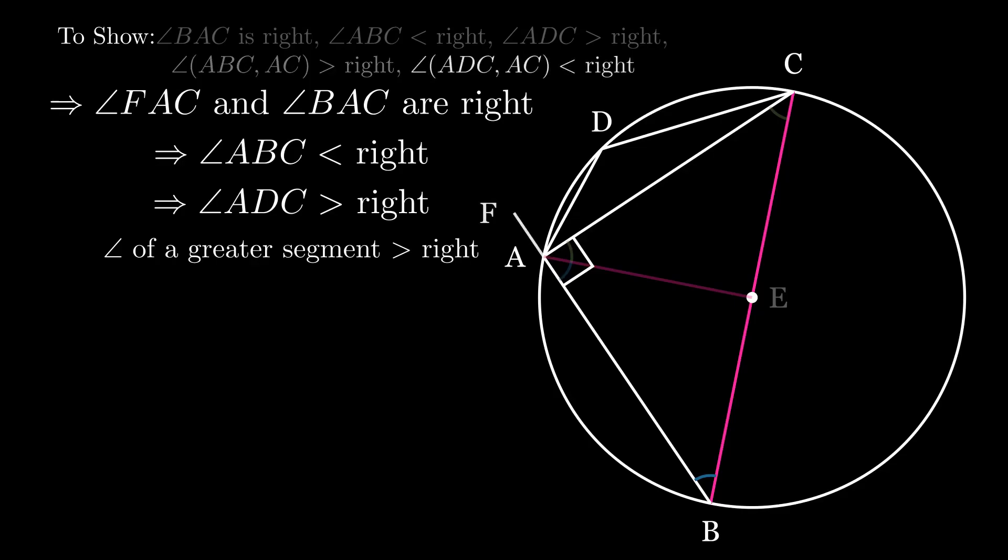To prove the last point, note that the angle contained by the circumference arc ADC and the straight line AC is less than angle FAC, which is right. So the angle of a lesser segment is less than a right angle.